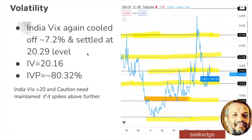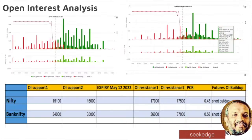The implied volatility of Nifty is 20.16 and the volatility percentile is also high, though it has cooled off from 85 to around 80. VIX remains above 20 and is trying to move up toward 22, and is not ready to fall to the 15 level. This means the market will be very choppy, so you have to be cautious.